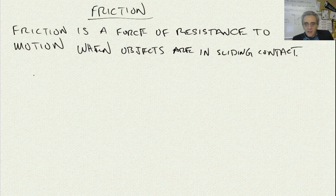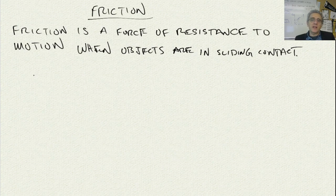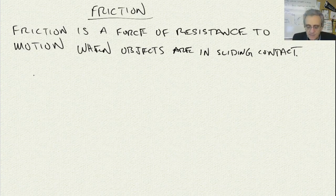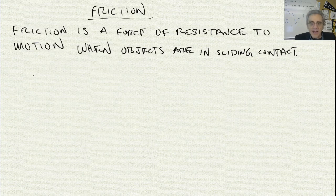Our next topic is friction. Friction is a force of resistance to motion when objects are in contact, specifically sliding contact. So when we have two objects that are sliding across each other, or perhaps even pending motion — like when something is about to start sliding — we have friction involved.